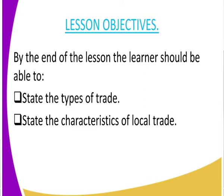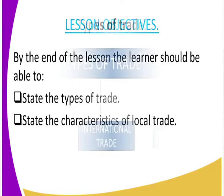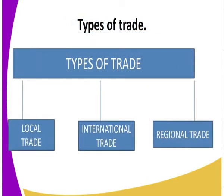Now let us look at what are these types of trade. We have three types of trade: one, we have local trade; two, we have international trade; and finally we have regional trade. You can see our flowchart indicating the types of trade that we have. So we have local trade, international trade, and regional trade. In today's class we will base our discussion on local trade.